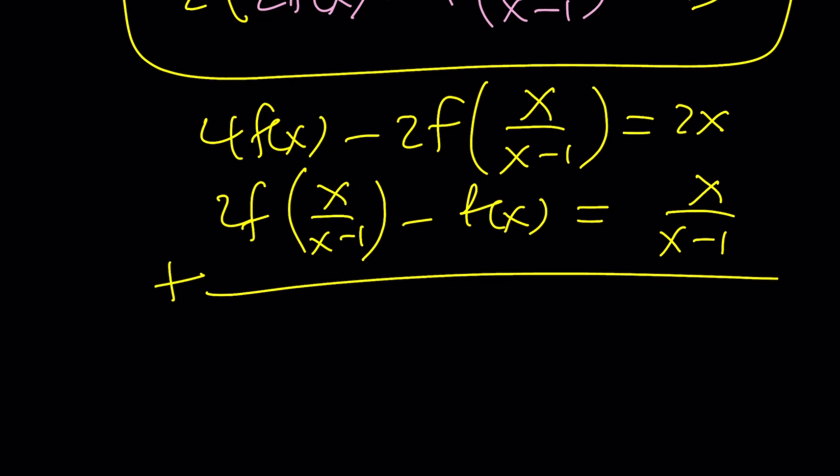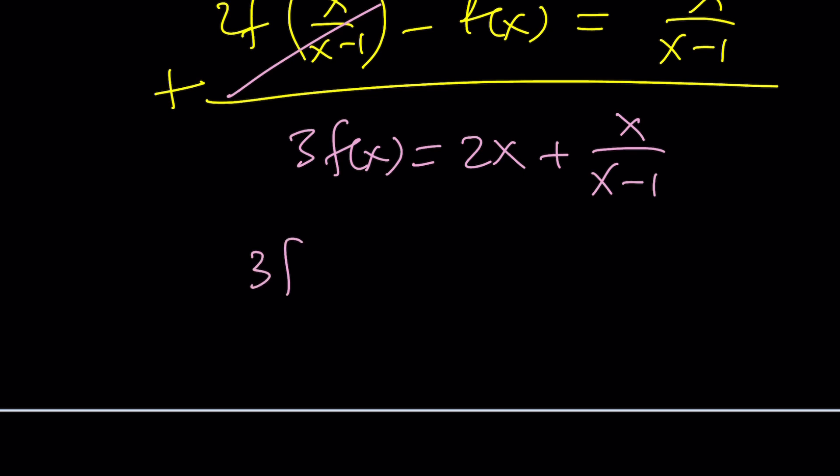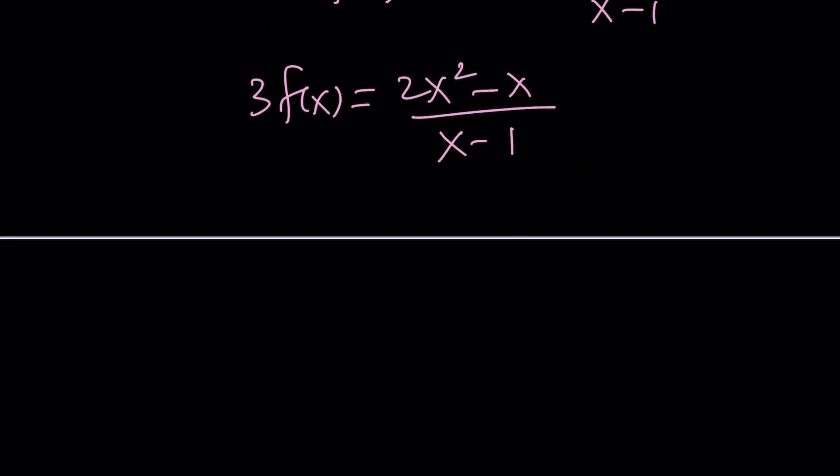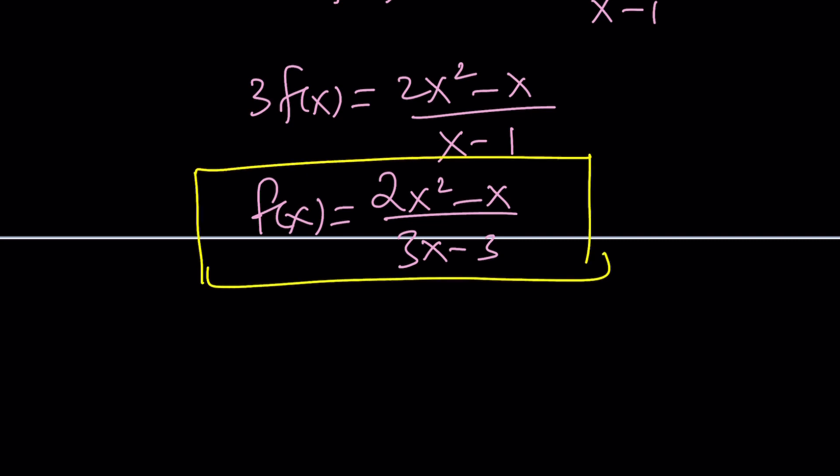And you're going to get from here you're going to be able to eliminate, if you add these two equations then these expressions are going to cancel out leaving us with 3f of x equals 2x plus x over x minus 1. And if you go ahead and make a common denominator you get 2x squared minus 2x plus x which is minus x divided by x minus 1 and then if you multiply both sides by one third or divide by 3 you're going to get 2x squared minus x divided by 3x minus 3 and that will be f of x.